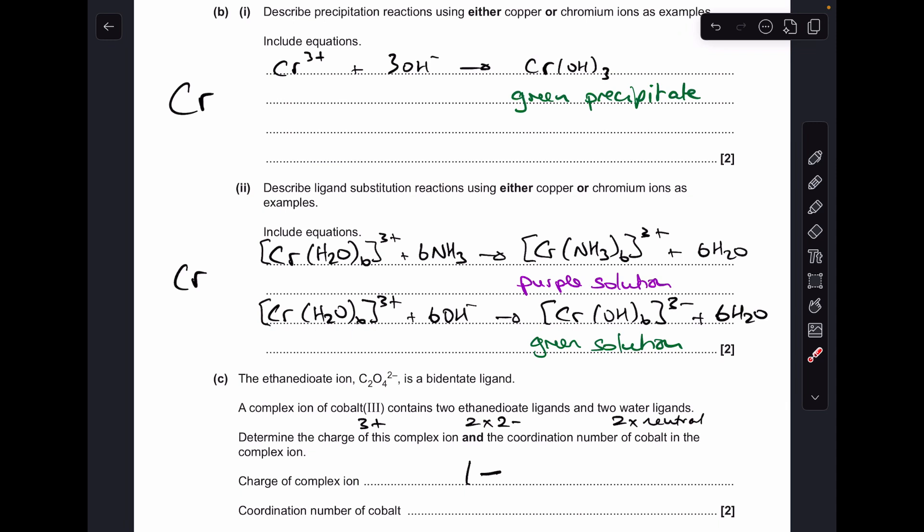And then moving on to the coordination number of the cobalt in the complex. Remember, coordination number is the number of coordinate bonds going to the central transition metal ion. So the two bidentate ligands are going to be forming two coordinate bonds each, so there will be four coming from that. And obviously water is a monodentate ligand, so they would be putting one each. So obviously the total there is six.